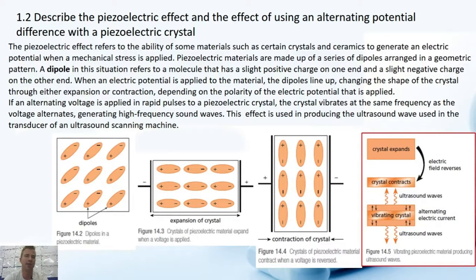If an alternating voltage is applied in rapid pulses to the piezoelectric crystal, the crystal vibrates at the same frequency as the voltage alternates, generating high frequency sound waves. This effect is used in producing the ultrasonic wave used in the transducer of the ultrasound scanning machine.